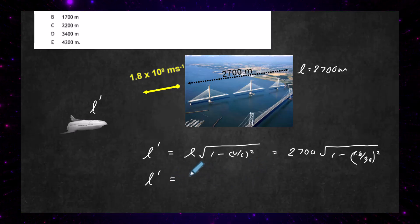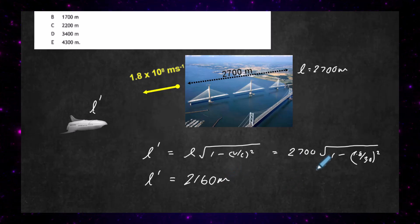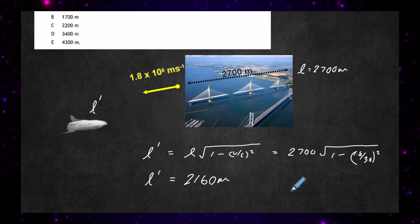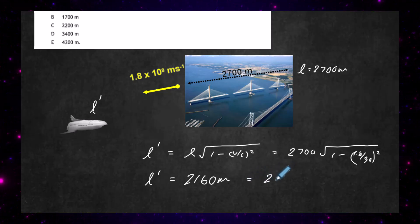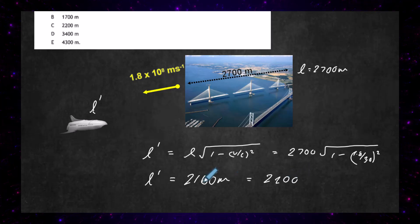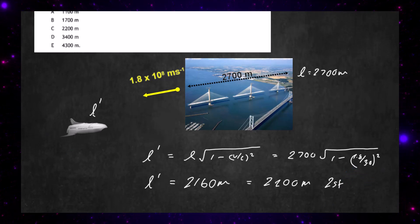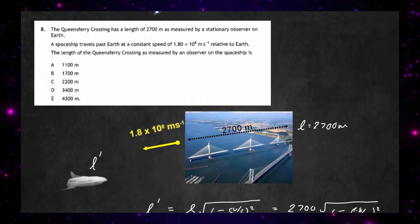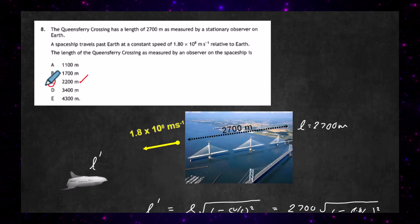We do that in our calculator and get the length observed to be 2160 meters. Now 2160 meters to two significant figures rounds up to 2200 meters — we have to round up that 6 — so the answer is 2200 meters. That's to two significant figures, and the answer is C.